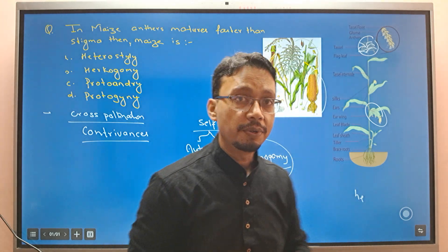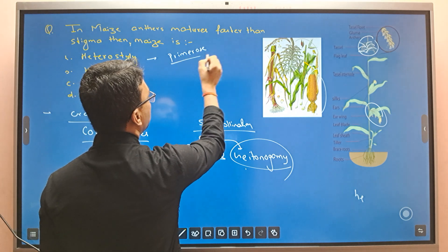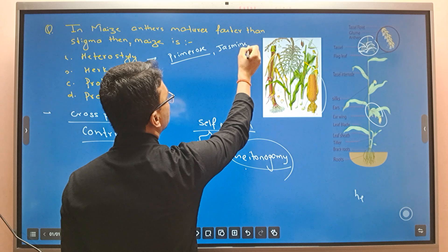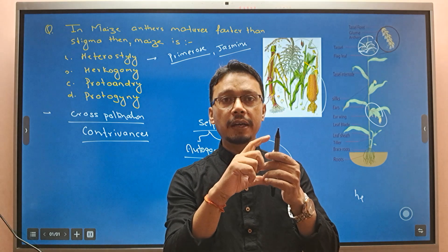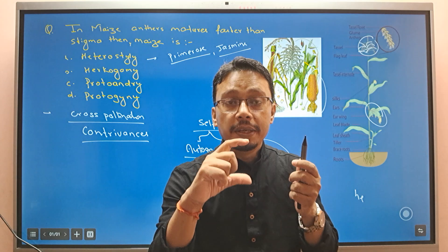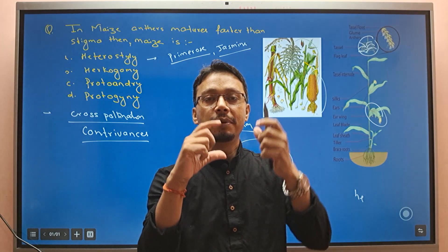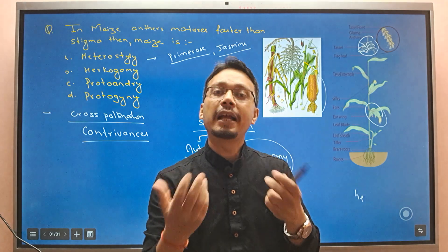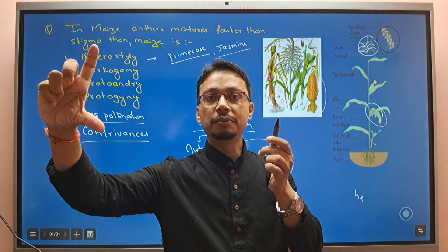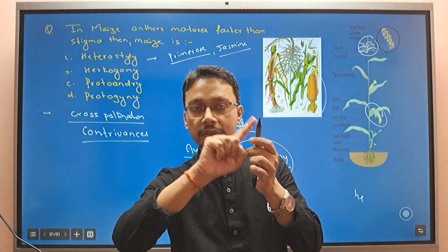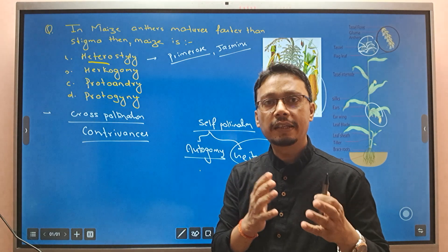Cross-pollination is genetically better — it manages genetic variability in the offspring. When plants prefer cross-pollination, they develop techniques or skills to ensure it. For example, primrose or Primula shows different lengths of style — heterostyly. The filament length and style length match in different flowers so that cross-pollination is ensured rather than self-pollination.